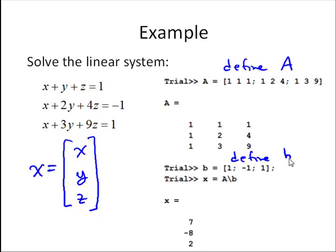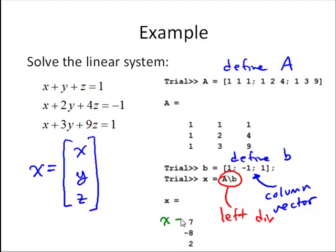Note, again, with the rules of matrix multiplication, it's very important that B has to be a column vector. Note the elements are separated by semicolons to make that a column vector. And then we're just going to use left division to solve for x, and that gives us our final result. So x equals 7, y equals negative 8, and z equals 2. And that concludes this brief introduction to solving linear systems in MATLAB.